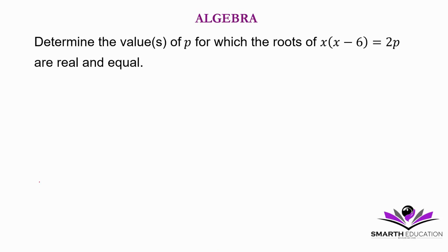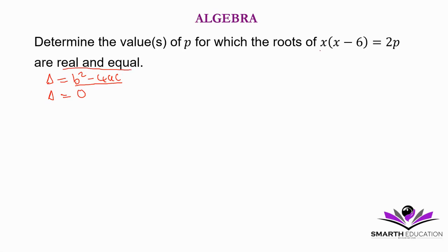When the roots are real and equal, we know that the discriminant — remember the discriminant is equal to b squared minus 4ac — is equal to 0. So it means b squared minus 4ac is equal to 0. When the roots are real and equal, we have to write our equation in standard form.